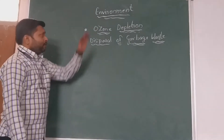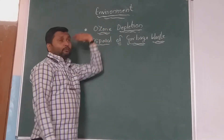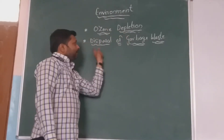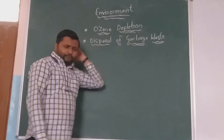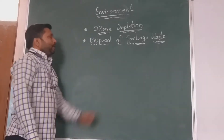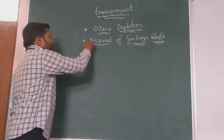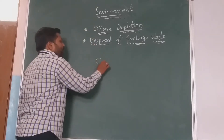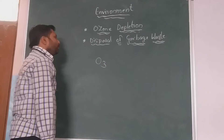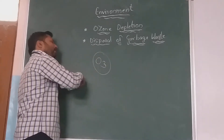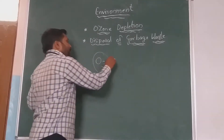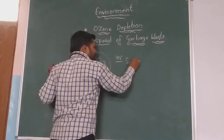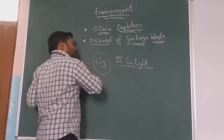We know that today there is a lot of impact on the environment. The first impact is the ozone depletion and the second is the garbage waste which we are going to produce. The ozone is what chemically we call O3. This ozone is a protective layer to the earth, which is protecting the ultraviolet rays coming from the sunlight, from which the earth is going to be protected.